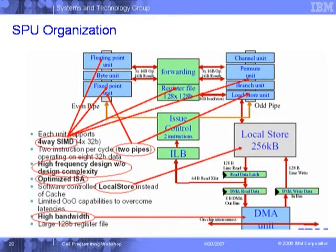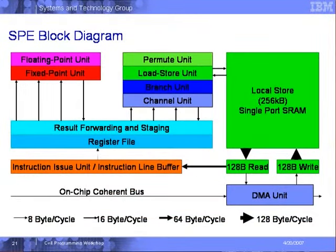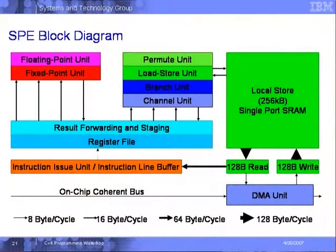We use DMA to transfer data at very high bandwidth. This block diagram shows the floating point and fixed point units on one side. On the PPE, the branch and fixed point units are on the same pipe. On the SPE organization here, you don't see the VMX — because every instruction here is a vector instruction. The VMX instruction refers to instructions on the PPE only. The SPU instructions have a different instruction set from the PPE and VMX. We have the two pipes: floating point units, fixed point units, and the permute, load/store, branch, and channel units.